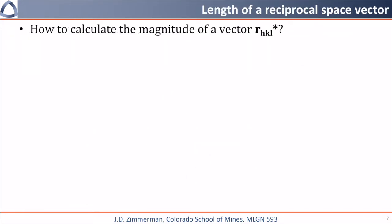Now that we know how to calculate G star from any information you might be given, we want to learn how to calculate the length of a reciprocal space vector. As you might have expected, the length, or magnitude, of r-star squared is given by the vector dotted with itself.